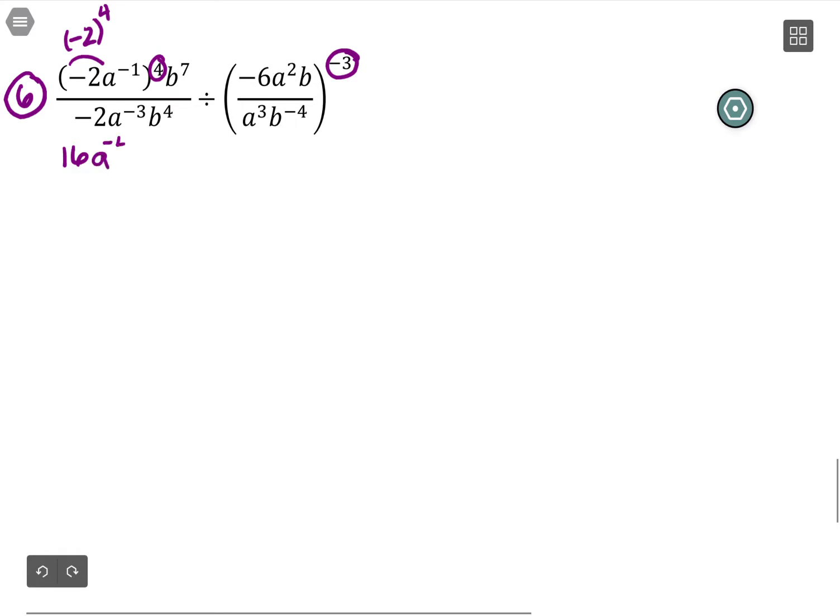So multiply exponents: b to the 7, -2a to the -3, b to the fourth.